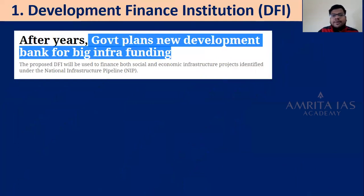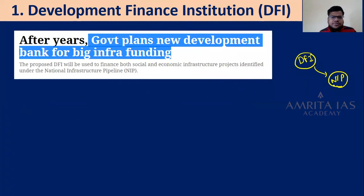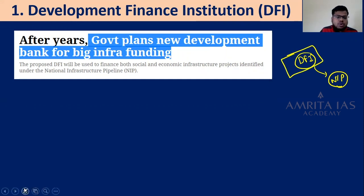The first topic is Development Financial Institutions, which is in the news. The government is thinking to create these Development Financial Institutions to fund its major infrastructural program — the National Infrastructure Pipeline. The basic idea is to create a lot of infrastructure, and for that the government is thinking to recreate Development Finance Institutions. This was in the news last year in August 2019.